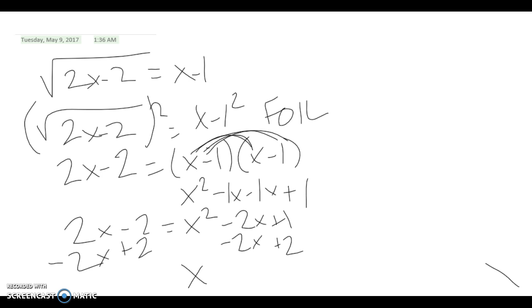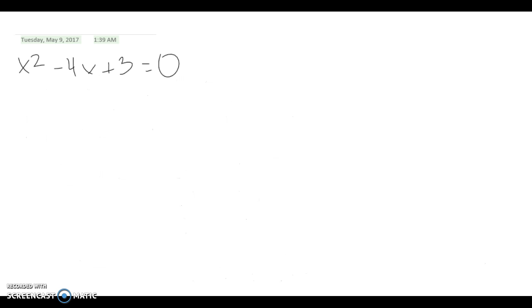We're left with x squared minus 4x plus 3. Okay, so we have x squared minus 4x plus 3 equals 0. Now we can factor. In order to factor, we have to get the product of c to equal b when it's added together.